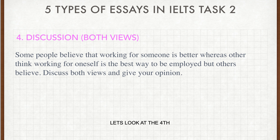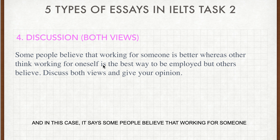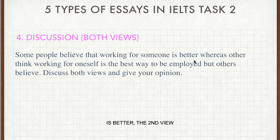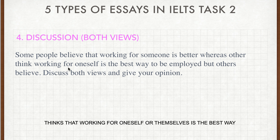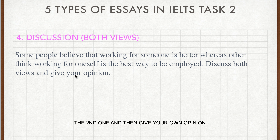The fourth type of essay in IELTS task two is the discussion question. They give you a question and ask you to discuss both views. For example: 'Some people believe that working for someone is better' — that's one view. 'Others think that working for oneself is the best way to be employed' — that's the second view. You need to discuss the first view, the second view, and then give your own opinion. So there are three things to talk about.